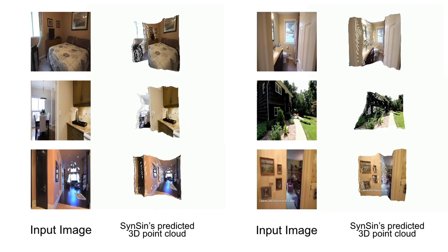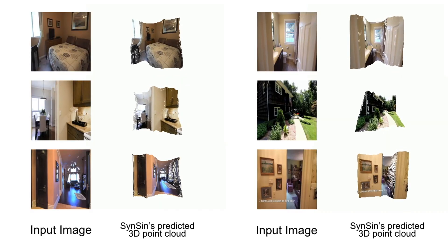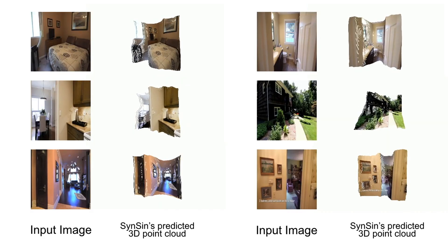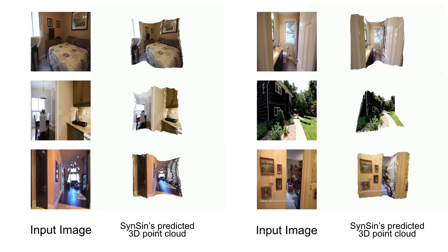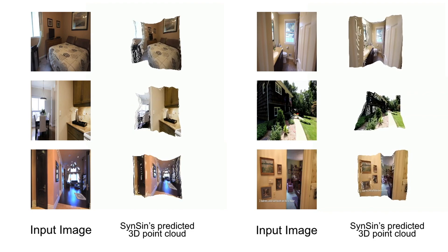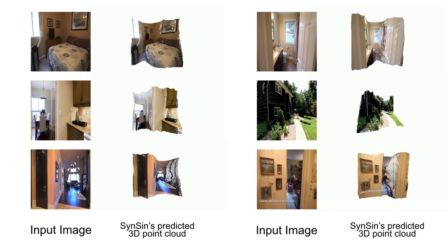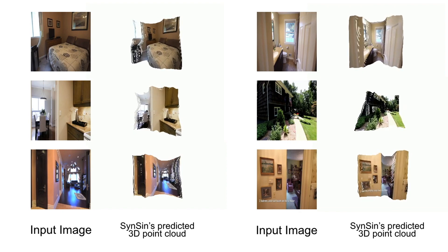Finally, we visualize the latent 3D point cloud learned by our model. Given the input image, SynSyn predicts the shown latent 3D point cloud. In the model, this is actually a 3D point cloud of features, but we're showing RGB colors for simplicity.